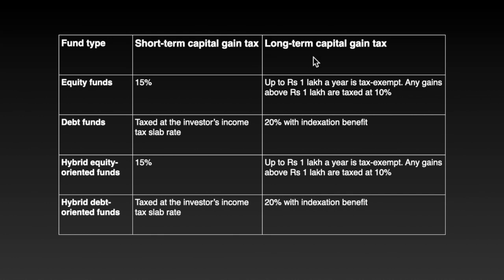For long-term capital gain tax, you will have 10% tax. If you do the long-term capital gain tax, you will have a tax exemption. Let's do the calculation and correct it if it is slightly off.